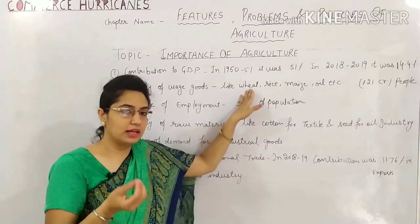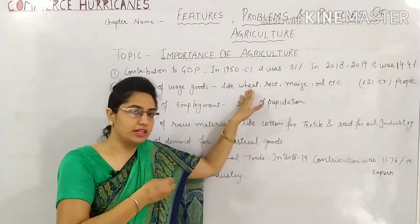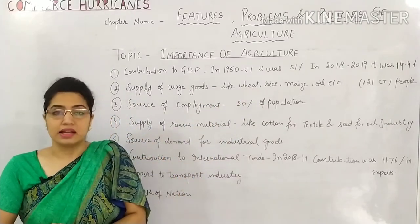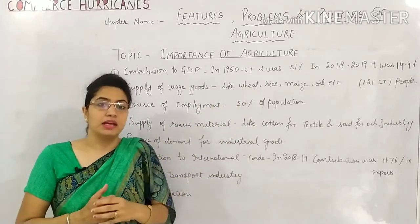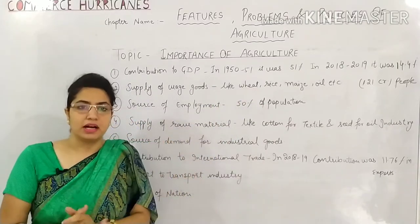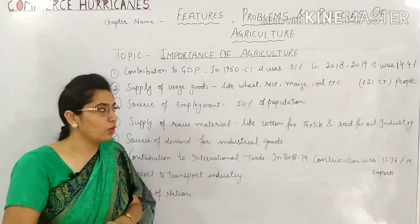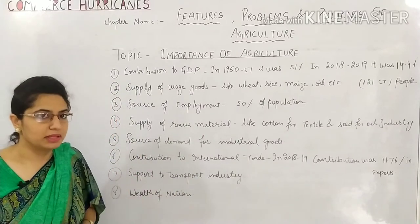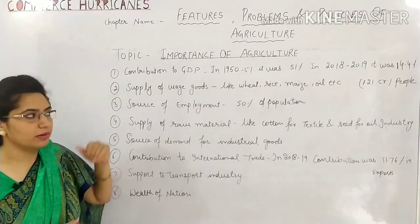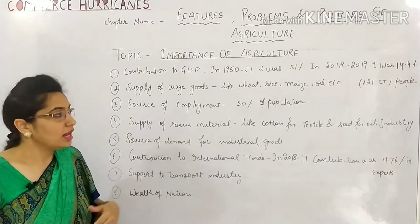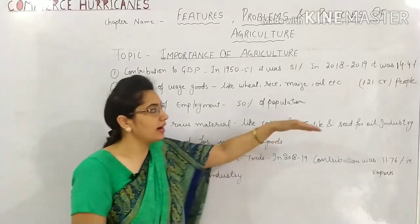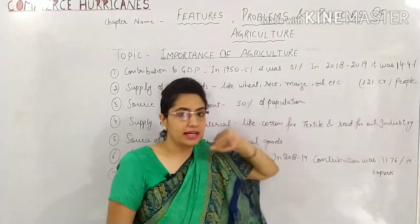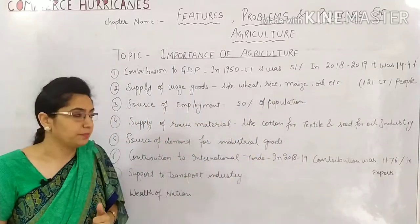If you want bread, where do you get wheat from? You get it from agriculture. So we can say that in India, if someone needs important essential items, they get them from agriculture. It is very important for our livelihood. Today, 121 crore people are getting these food products from agriculture.